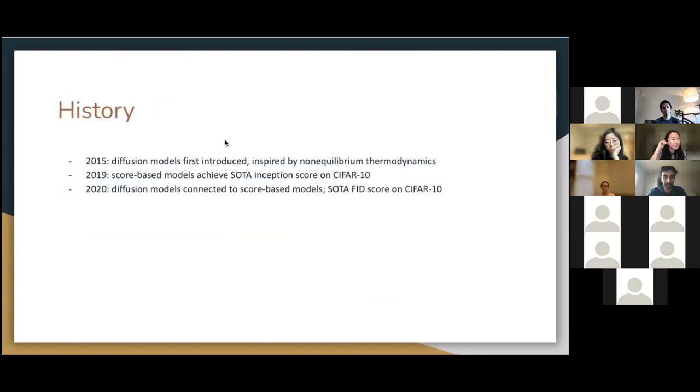The history of diffusion models is a little bit complex, so I wanted to go over it. They were first introduced in 2015, inspired by non-equilibrium thermodynamics, but they weren't very widely used. And then in 2019, something called score-based models came out of Stefano Ermon's group at Stanford and achieved state-of-the-art inception scores on CIFAR-10, which is pretty amazing that a new model class can achieve comparable results to GANs, which have already had people working on them and tuning architectures and improving them for a couple years.